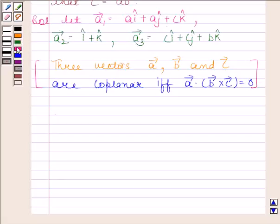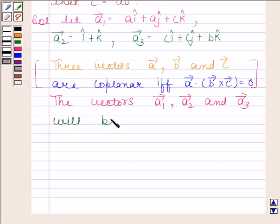Now, the vectors a1, a2, and a3 will be coplanar if vector a1 dot vector a2 cross vector a3 is equal to zero.